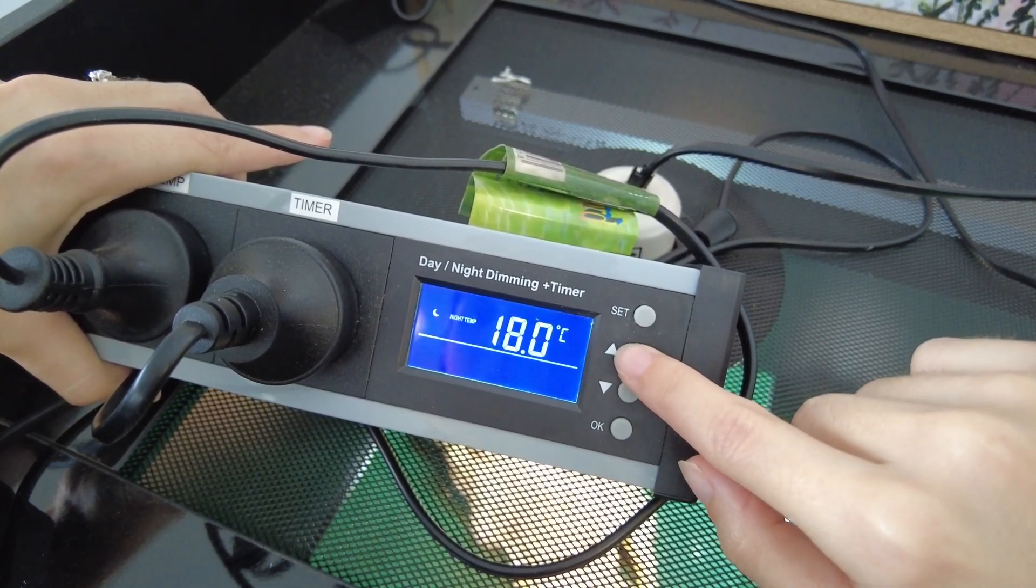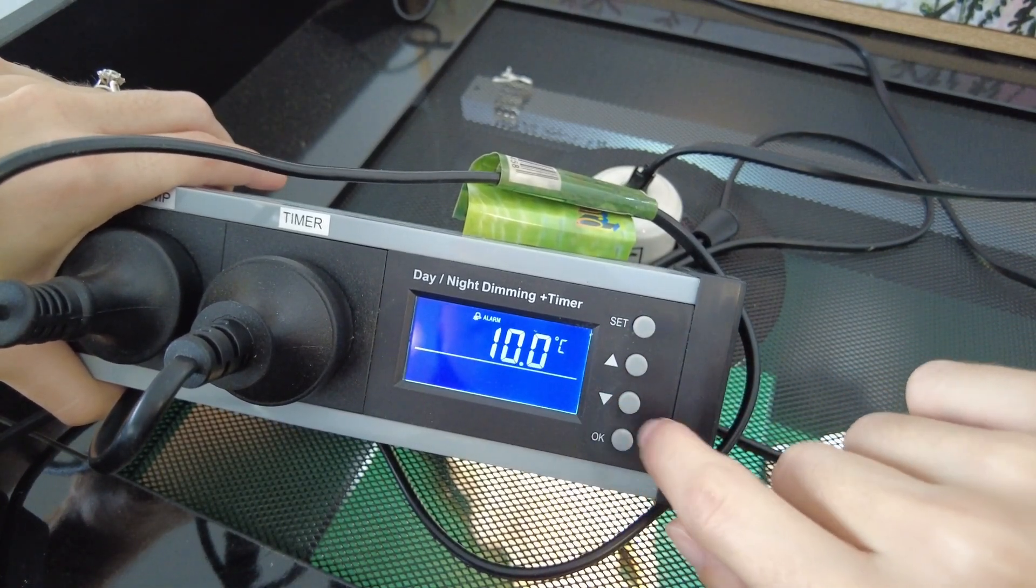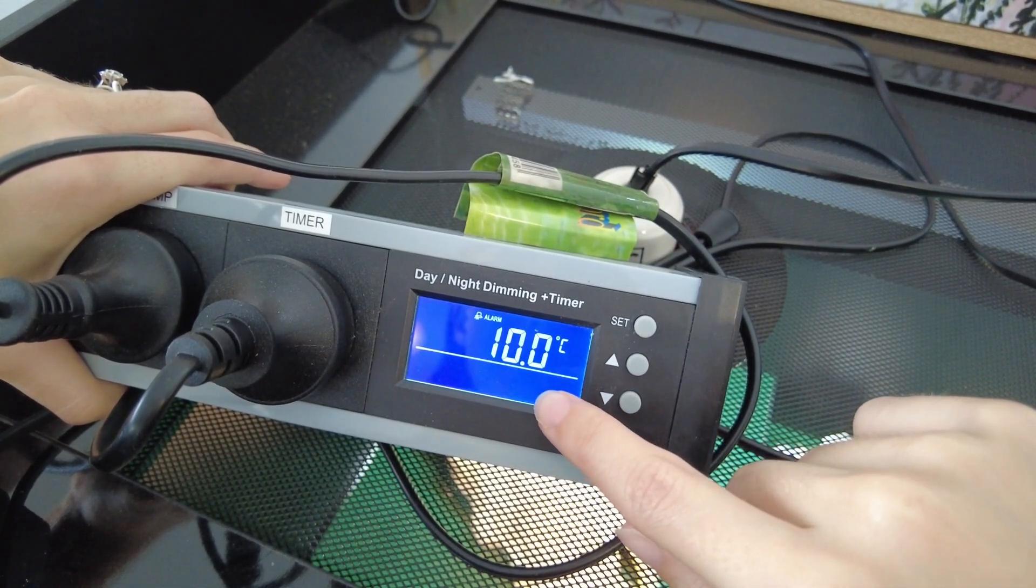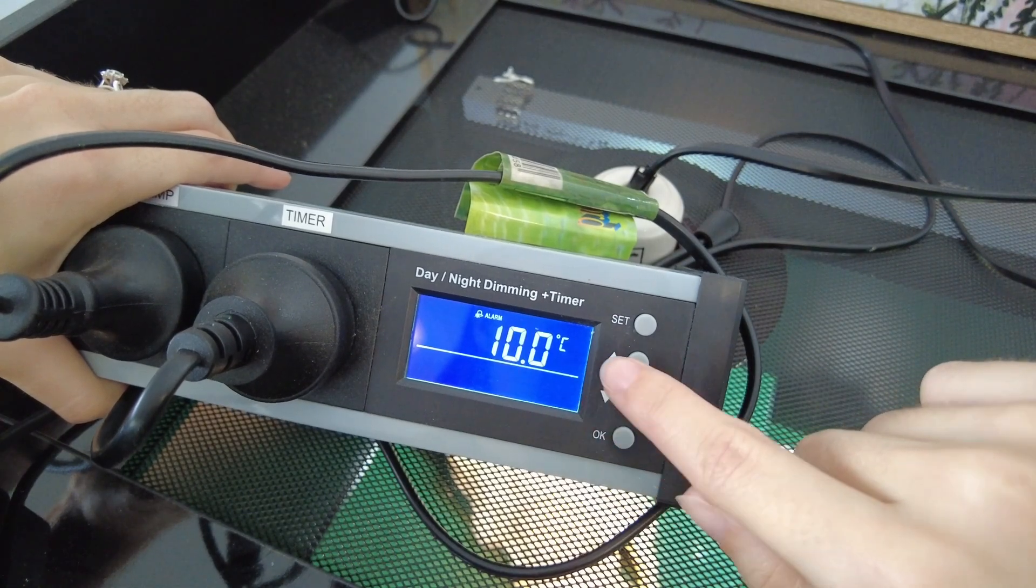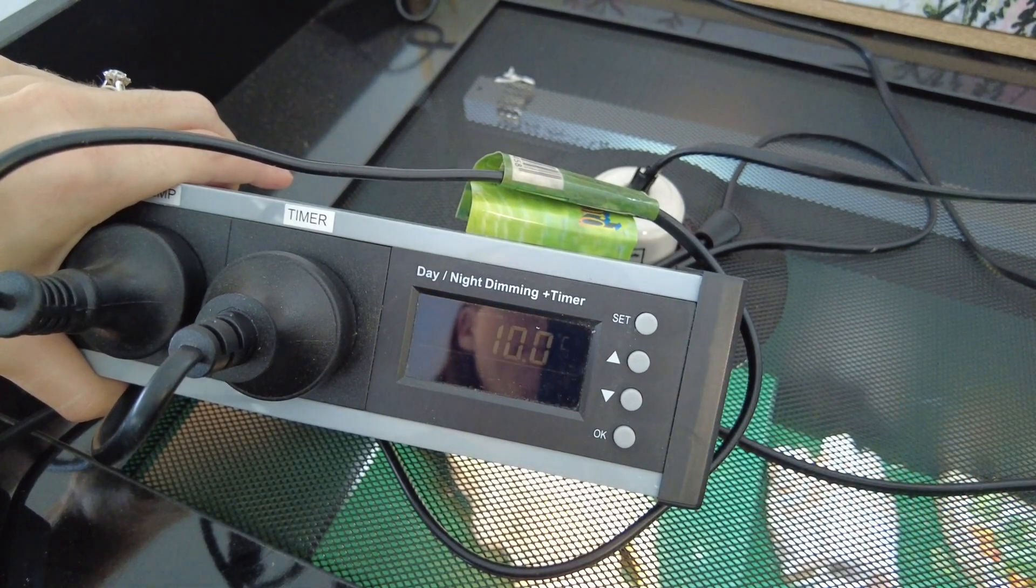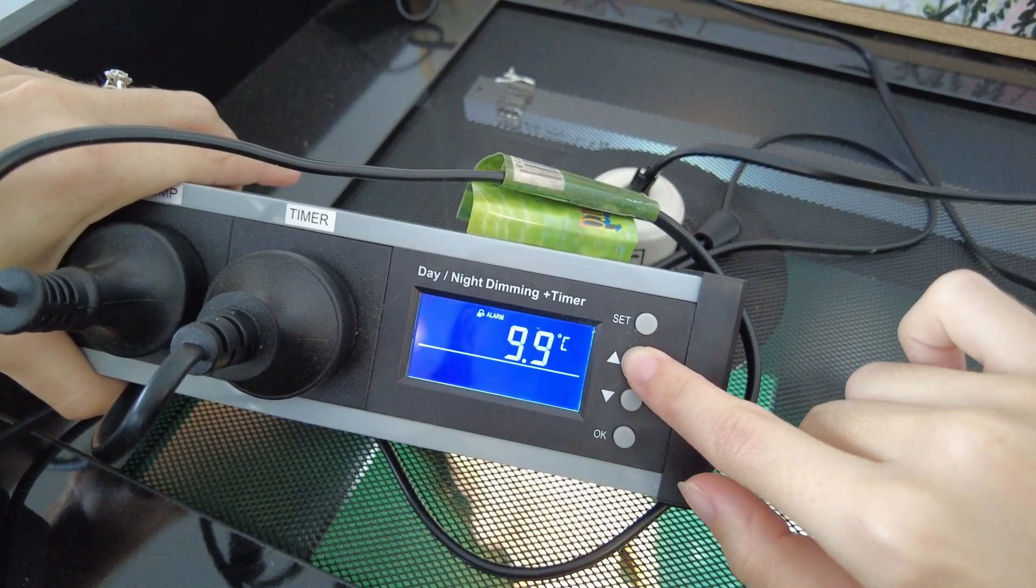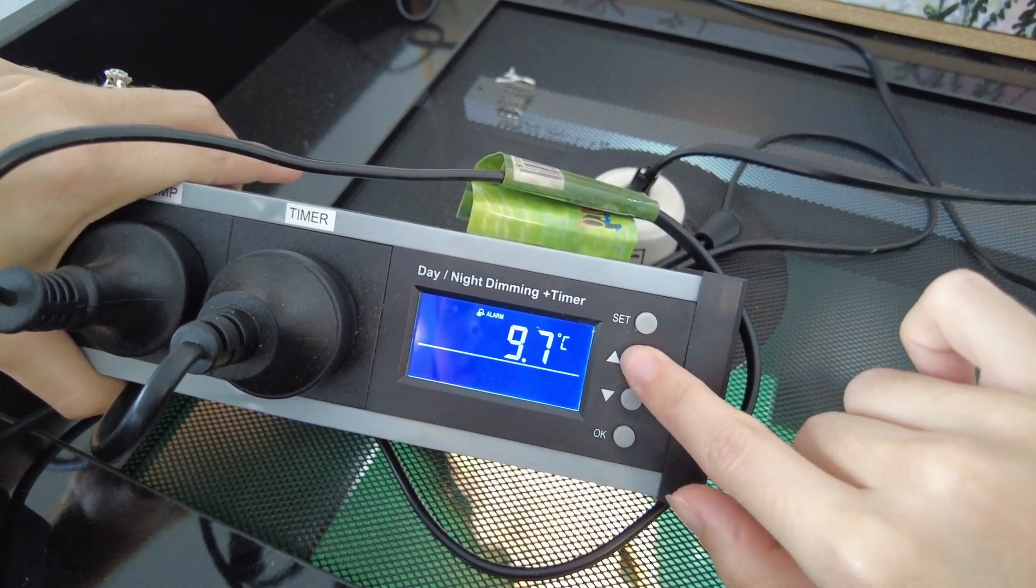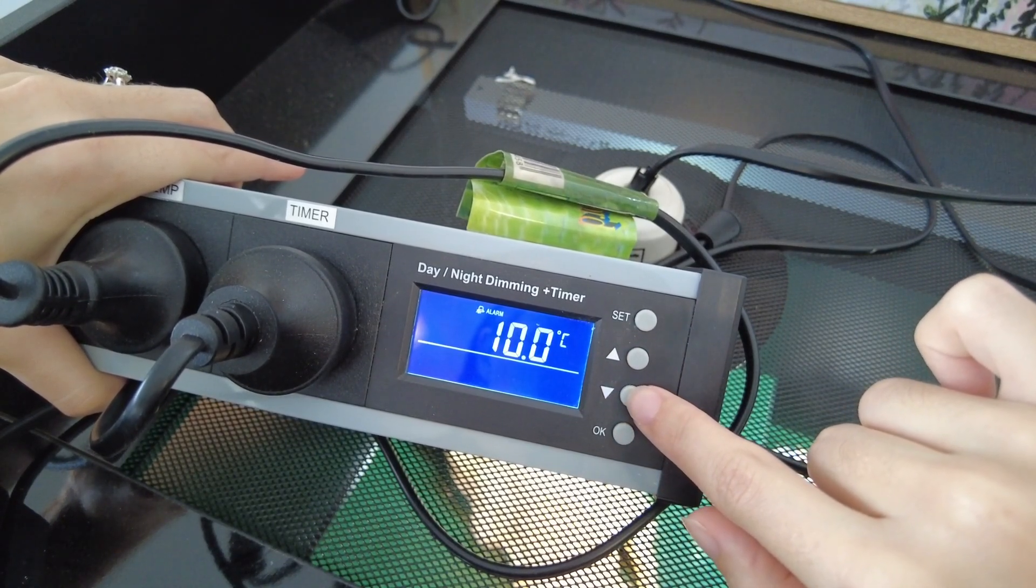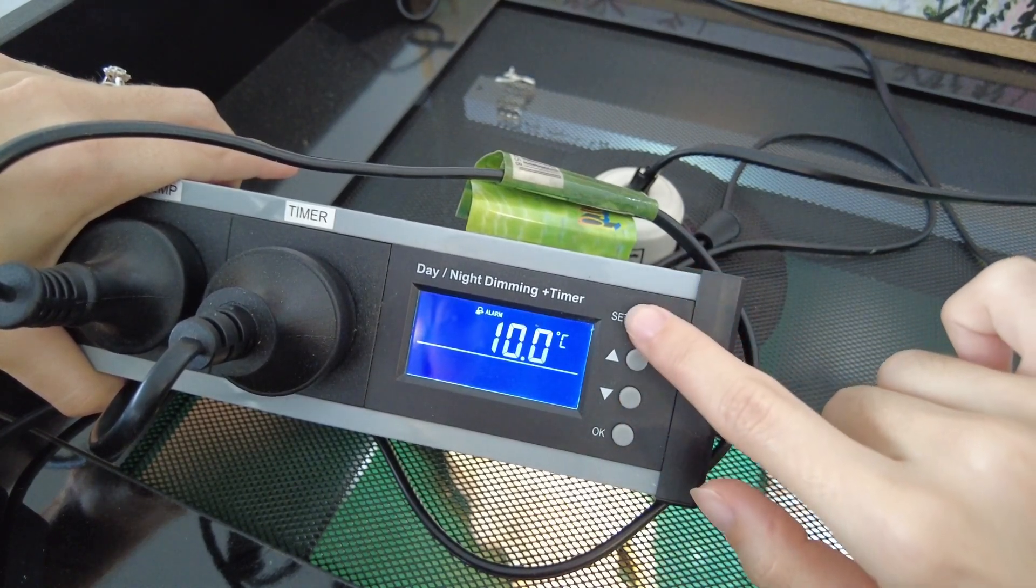So once you're happy with that, press set again, then we get this little thing come up that says alarm. So what this means is that for mine, if my temperature in the daytime or the nighttime goes above or below 10 degrees of the designated temperature, it's going to start beeping at me to warn me and let me know. So you can either set this to whatever you want if you do want the alarm to go off. I just set mine really high because I don't want it to go off, but there is also a way that you can turn the alarm off altogether and I'll show you how to do that now.